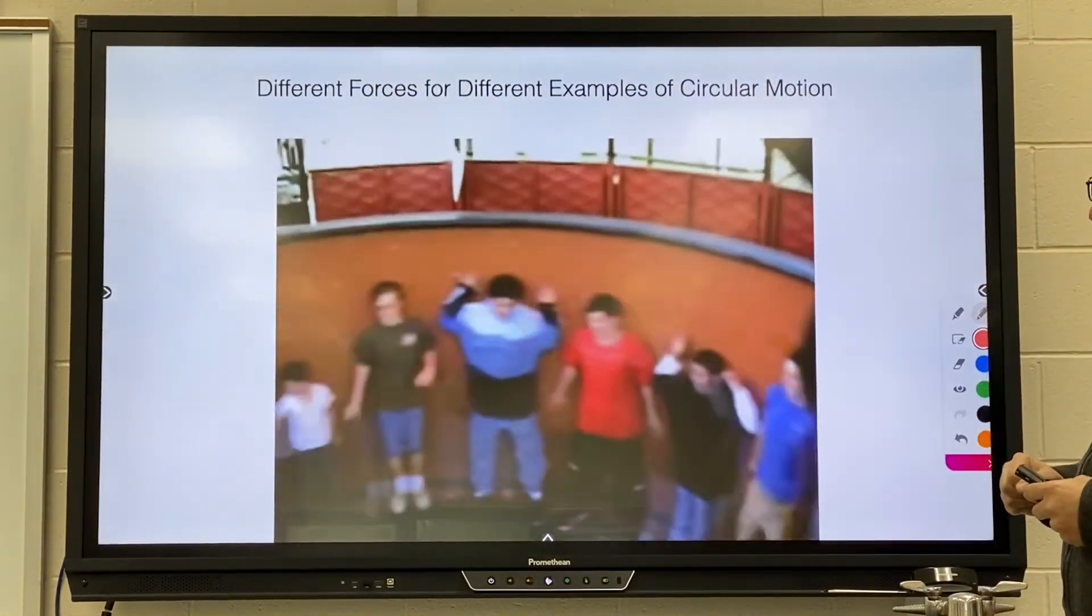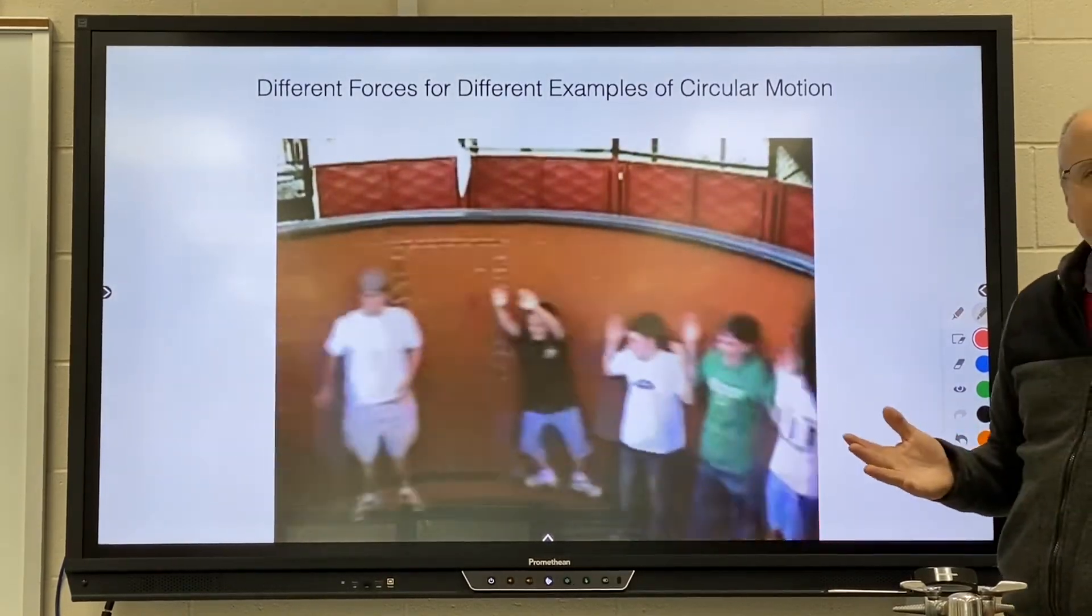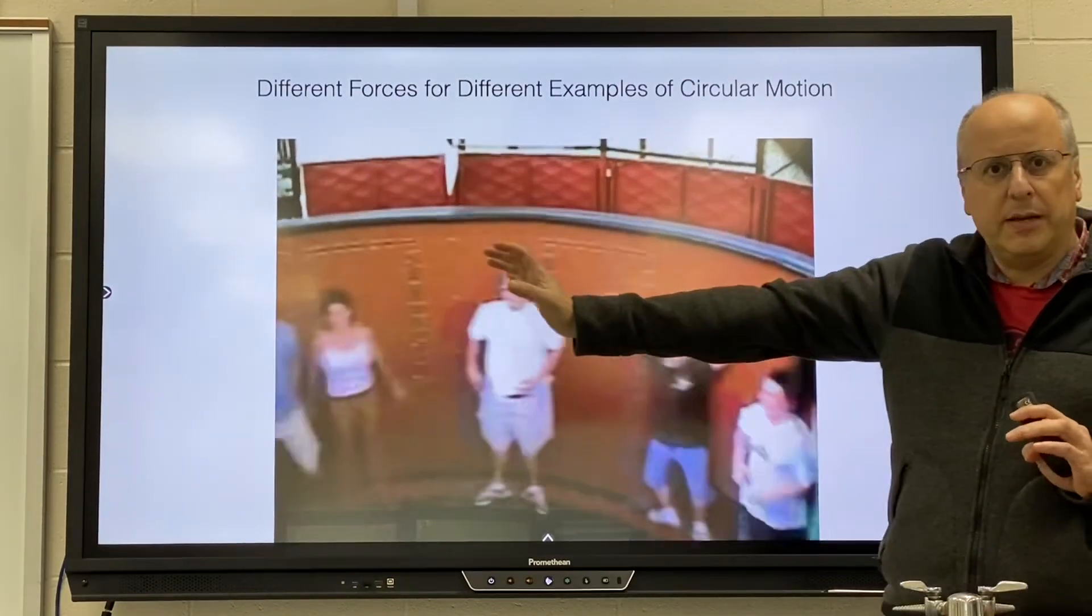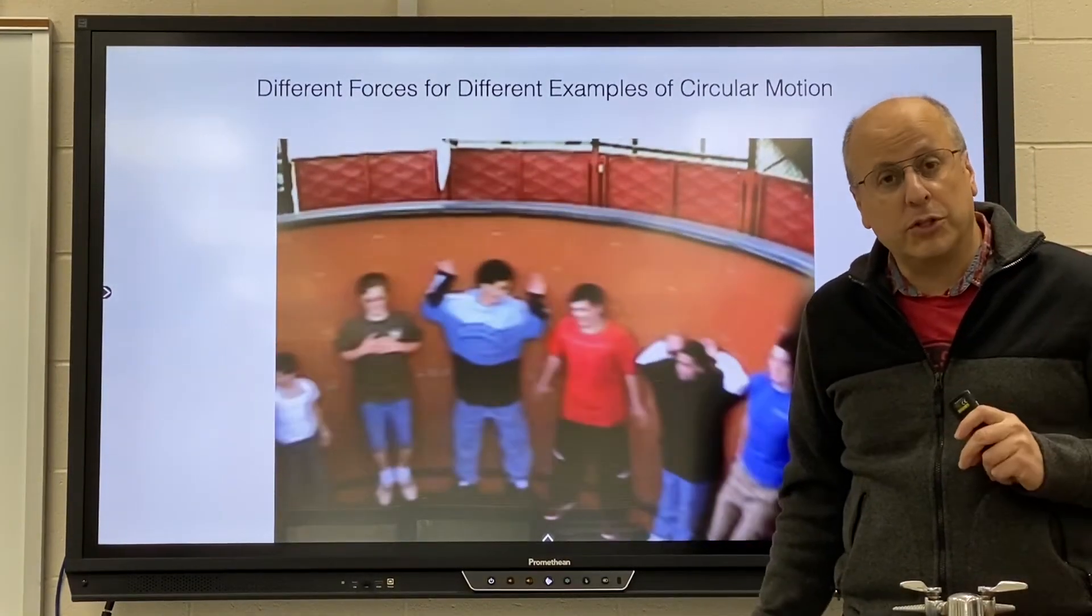Here are some kids on an amusement ride called the Gravitron. Here is the wall of the ride that is pushing them toward the center of the circle. This would be force normal.